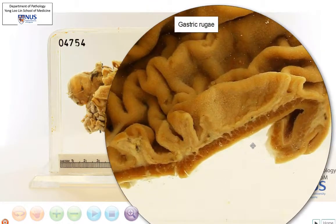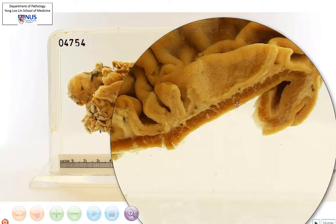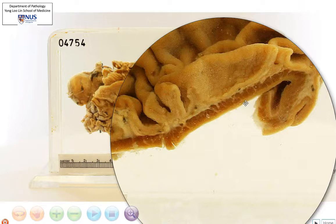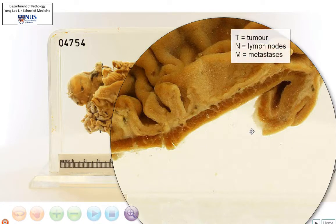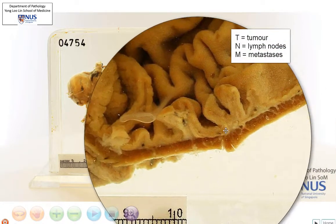If we look at the cut section of the wall over here at the greater curve, we can see this is the mucosa, this region is the submucosa, this thick brown line here is the muscularis propria, and just below that is the subserosal tissue, and then over here is the serosal surface. It's very important to know these layers because they are important in tumor staging — the TNM assessment of tumor stage.